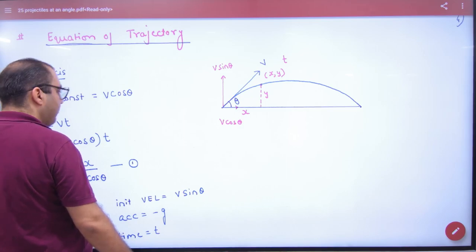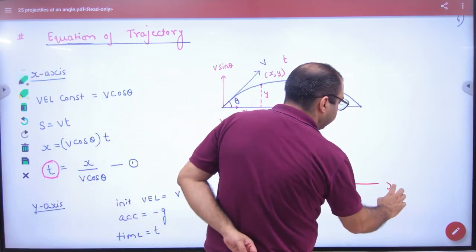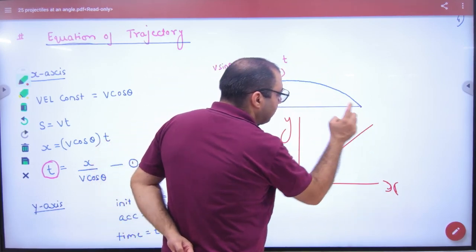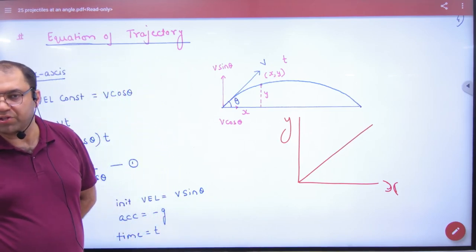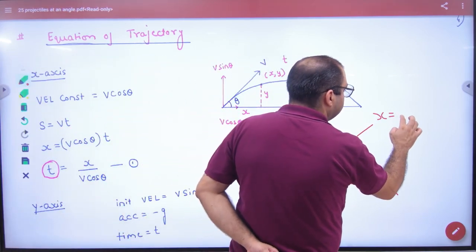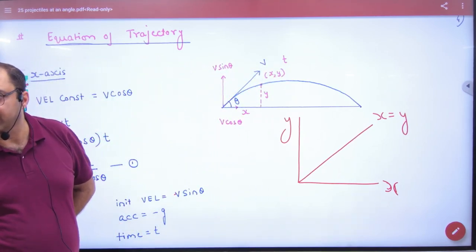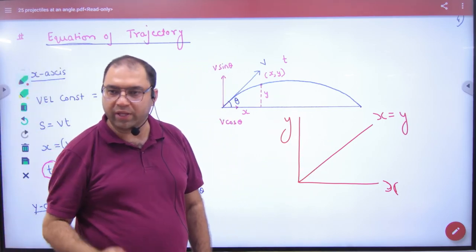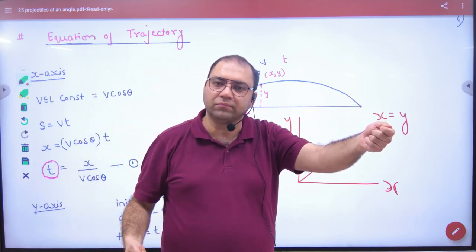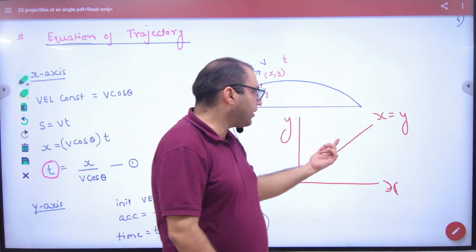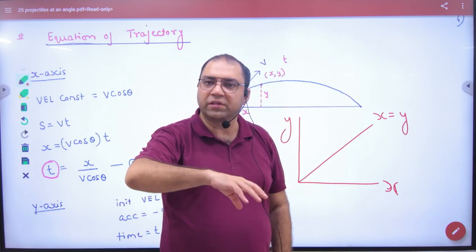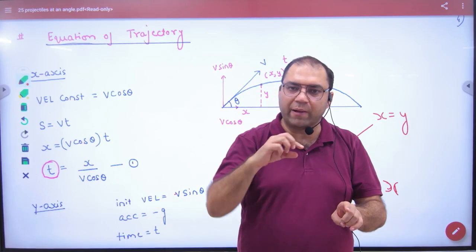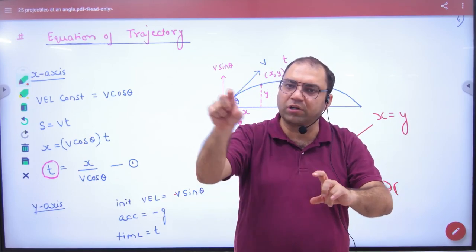In Maths, suppose you have an x-axis and a y-axis. Suppose there is a straight line passing from the origin at an angle of 45 degrees. What is this line? x is equal to y. x and y are equal. If I ask you the Equation of Trajectory, what is it? A straight line. So if the path is a straight line, the Equation of Trajectory is x equals y. If you plot x and y, and I give you the value of x, the corresponding y value is the same, and you will get a straight line.